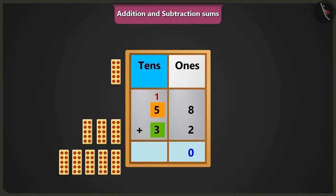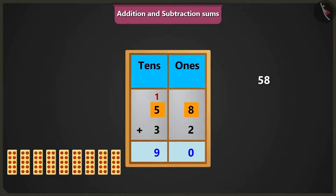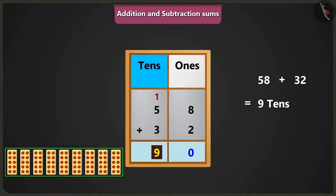it will be 6, 7, 8 tens. And if we will add 1 carry over to 8 tens, it will be 9 tens. So it will be 9 tens after adding 32 to 58.